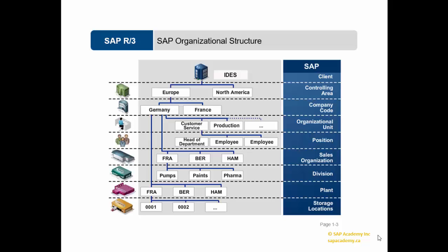Now that we have understood the organizational structure of SAP SD module, let's take a look at organizational levels of SAP PP module. In SAP PP module, you don't have any mandatory organizational structure to be maintained. The same MM organizational structure elements like plant, storage location, and so on would be used in the PP module as well.